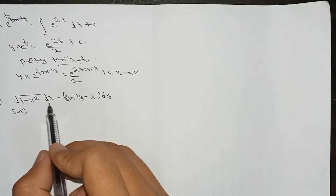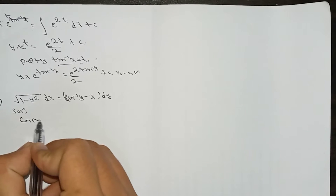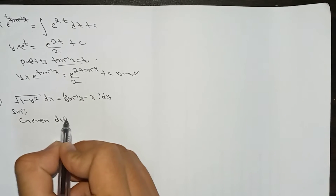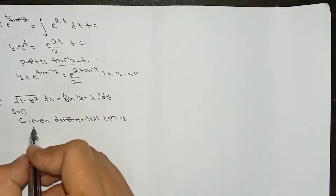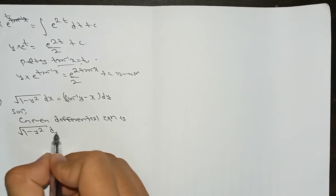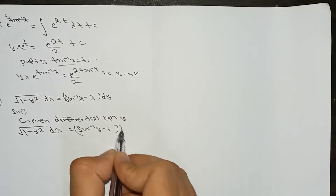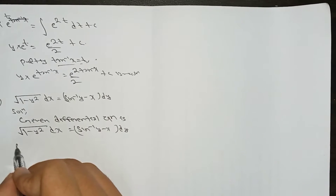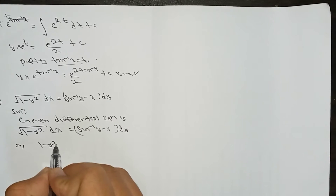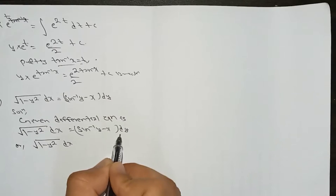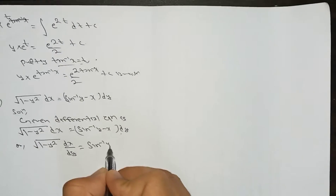The given differential equation is (1 - y²)dx = (sin⁻¹y - x)dy. We can rewrite this by taking terms to the left side: (1 - y²)dx/dy = sin⁻¹y - x.